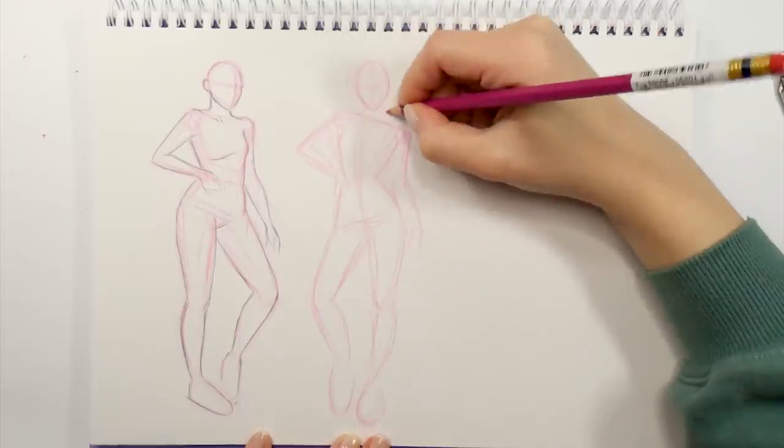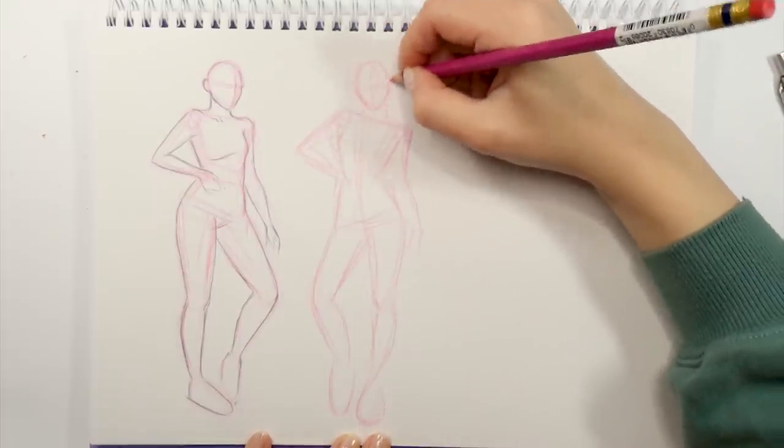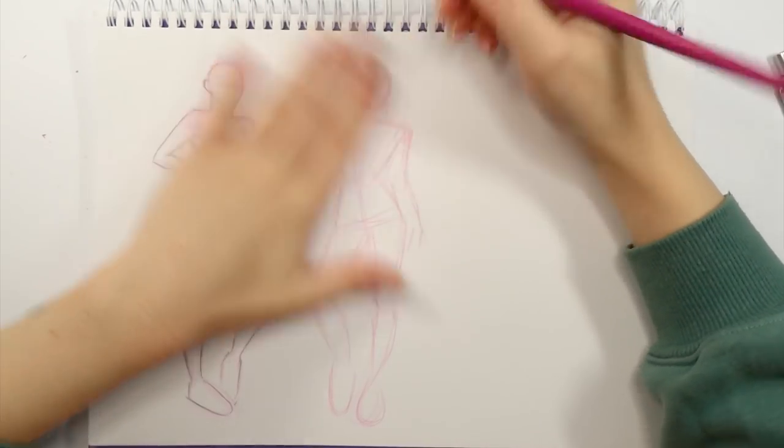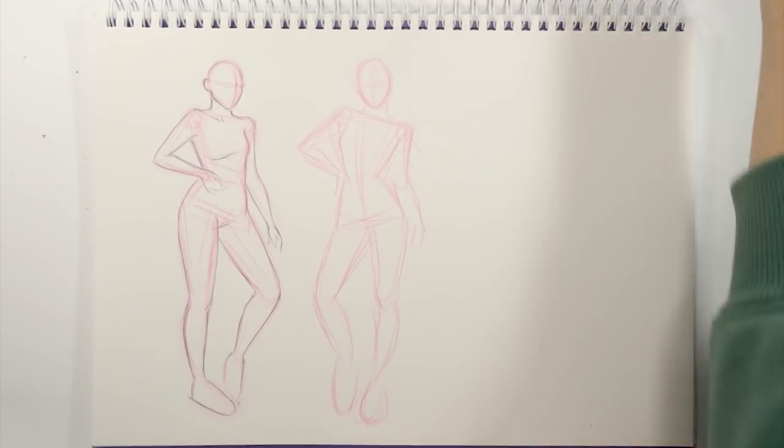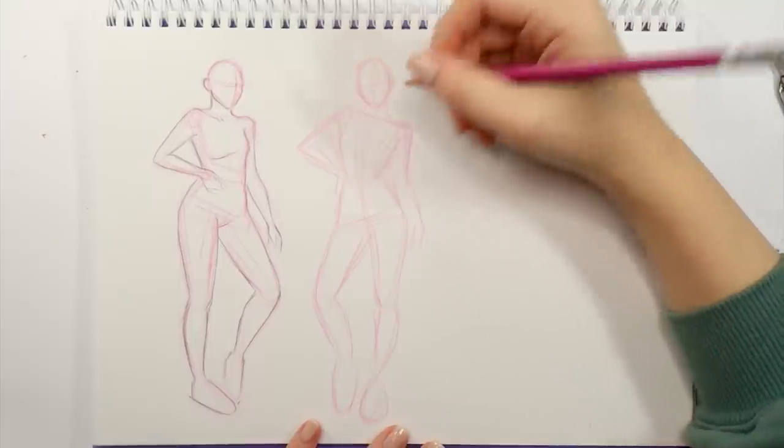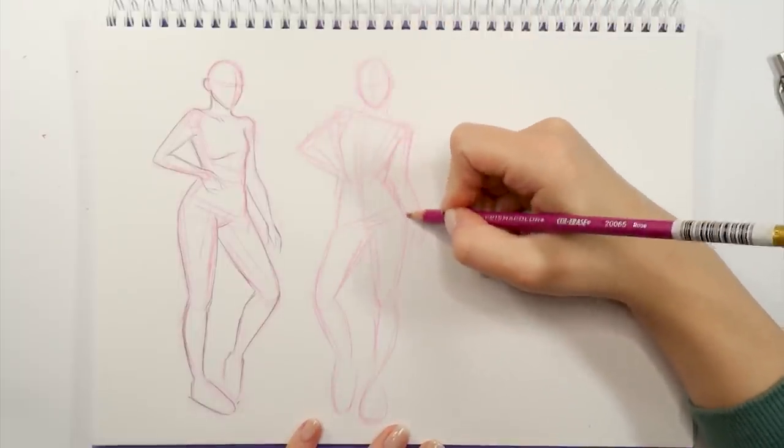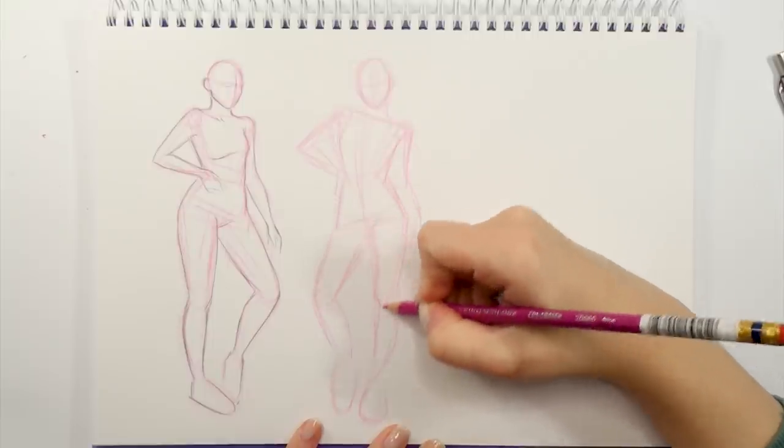Here we need to make sure that the body we're drawing doesn't feel like it's going to collapse or doesn't feel like it's flimsy or anything. We need to make sure that we feel like she's or he's standing on the ground and that this pose is pretty stable.